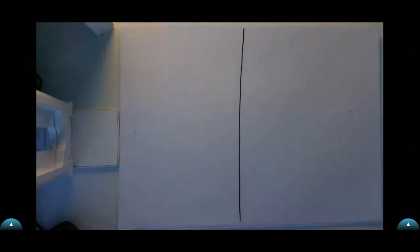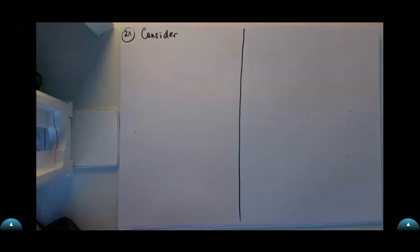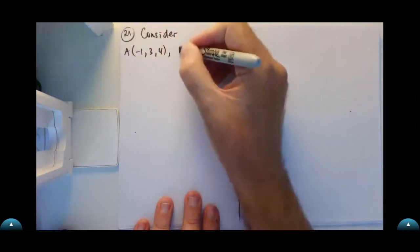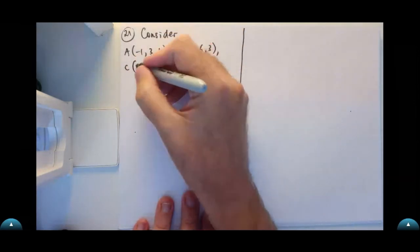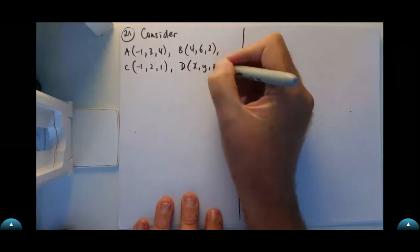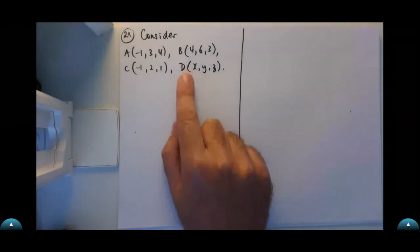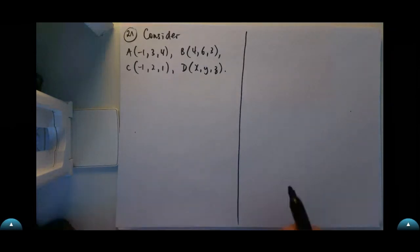The question is number 21. Let's consider the following four points: A, B, C, and D which is at coordinates X, Y, Z. We're in three-dimensional space and what we want to do is find the coordinates or the position for D such that ABCD is a parallelogram. There are lots of different ways to do it.